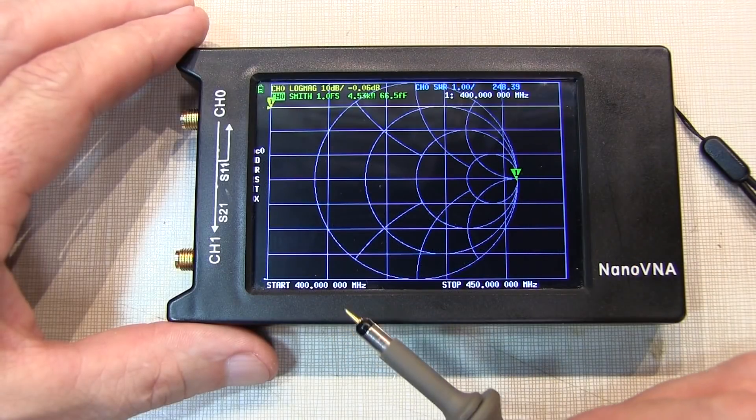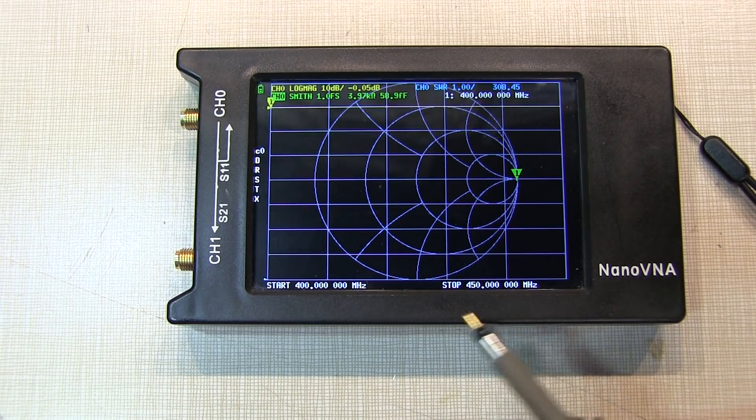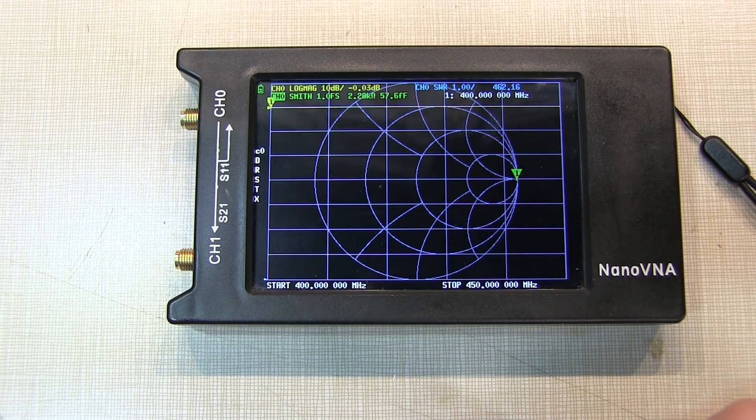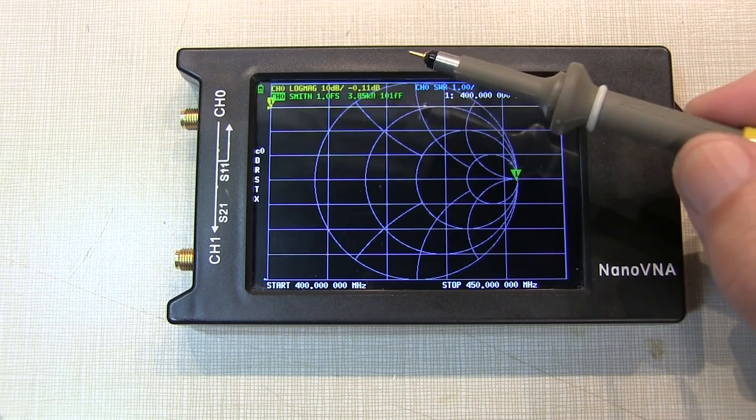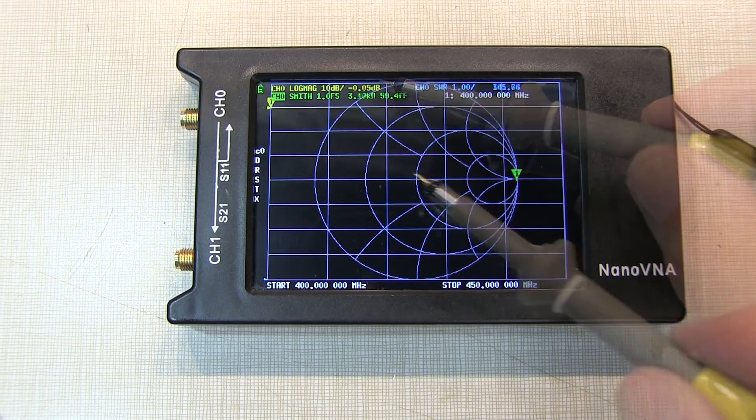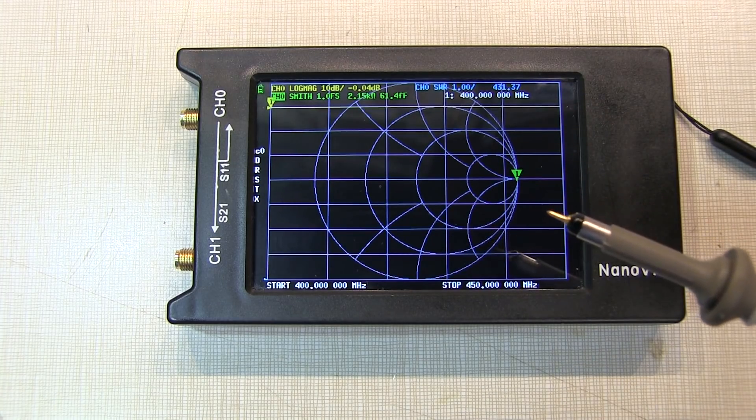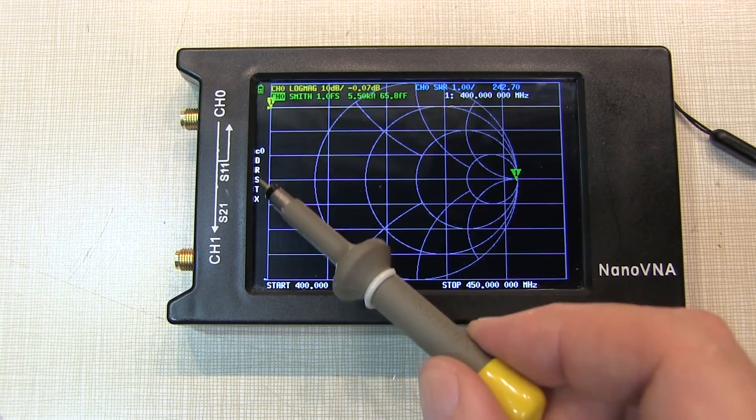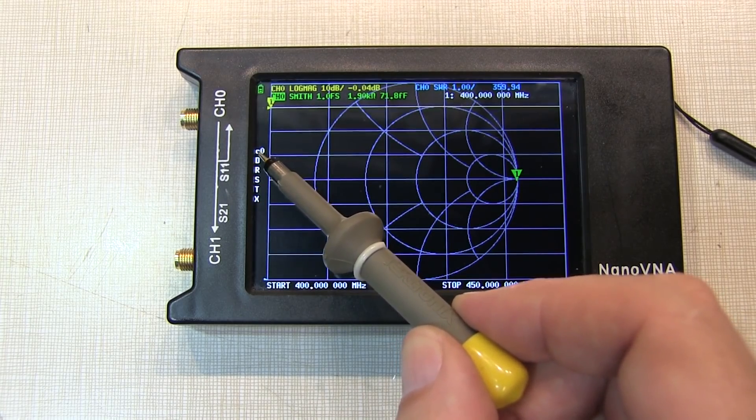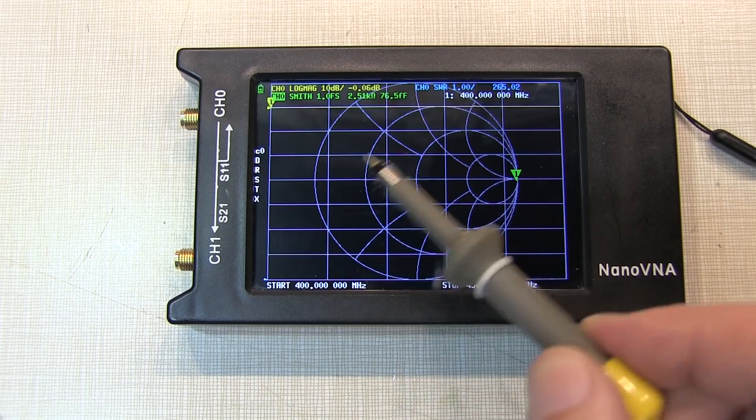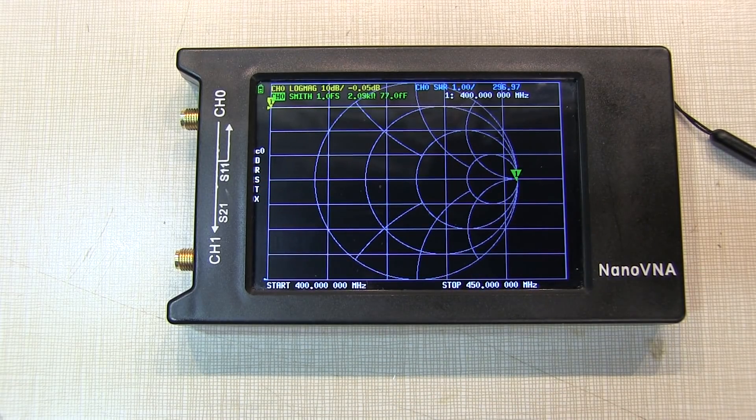I've just set up the VNA to take a look at a sweep from 400 MHz to 450 MHz on a UHF antenna that I've got down here. And I've turned on three displays. The log magnitude of the reflection coefficient, or the S11, the Smith chart to show the complex impedance, and then also have an SWR plot. We can see from the calibration indicator here that the small letter C means that I have a calibration, but the points that I'm using here are different than the calibration that's being used. So we really need to establish a new calibration.